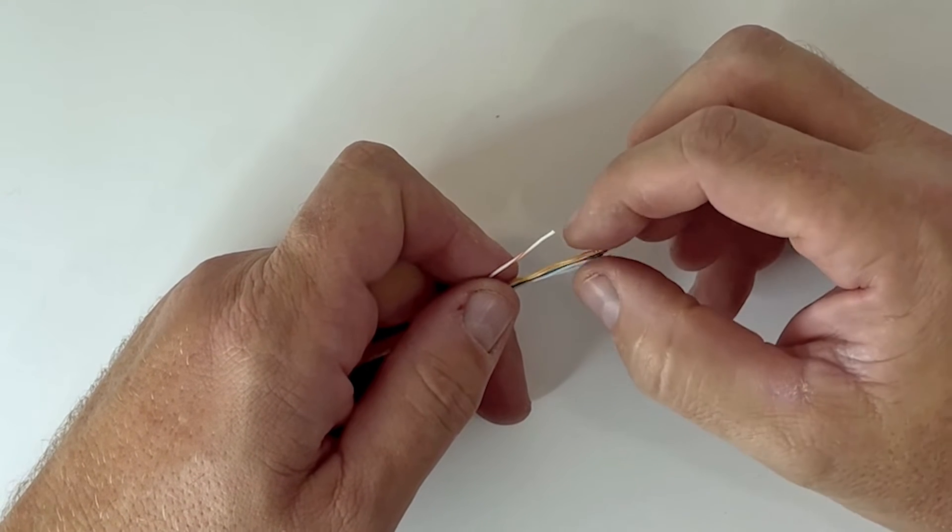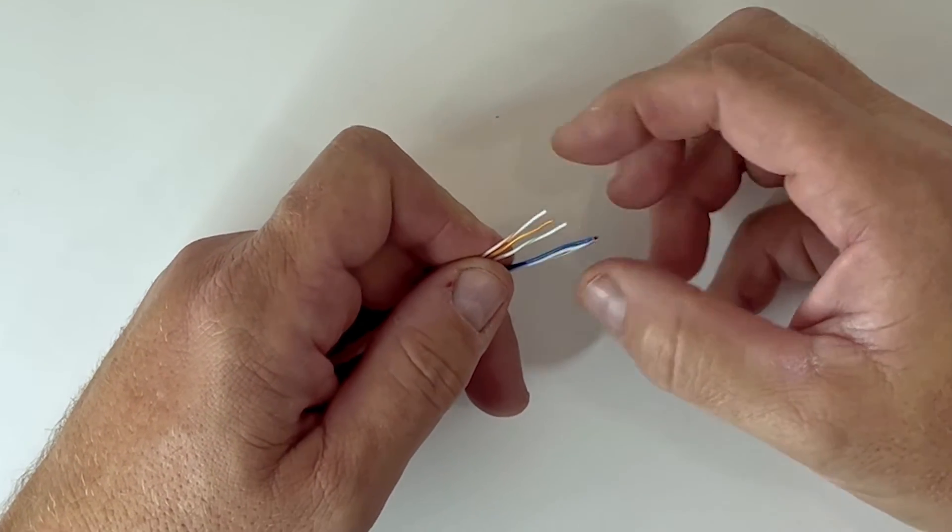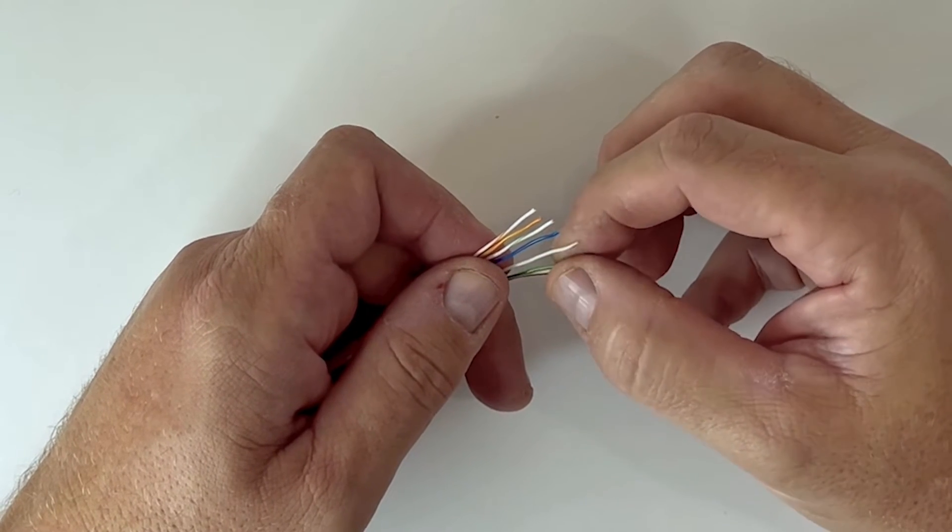The same pinout order needs to be used on both ends of your CAT6 connector cable or else your connectors won't be able to communicate. When they are the same, it's what you call a straight-through cable.